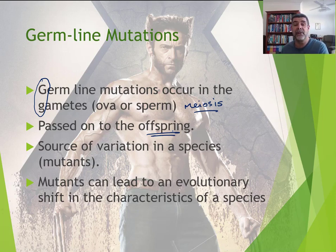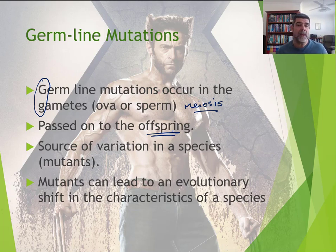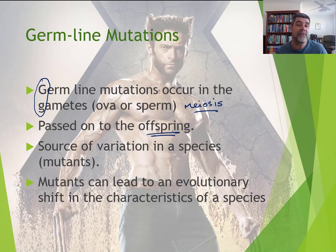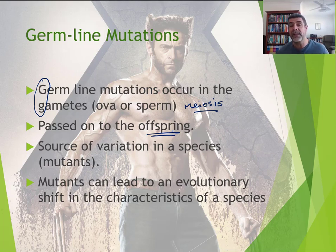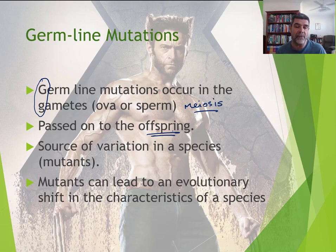This source of variation in a species can lead to variations upon which natural selection can operate. When we talk about mutations, we're not simply talking about something horrible that causes the individual to die early. These can be variations that create advantages for individuals, making them better suited to their environment, resulting in an increase in the proportion of those genes in the gene pool in future generations. We can get evolutionary shifts as a result of mutations during meiosis, leading to changes inherited through fertilization.